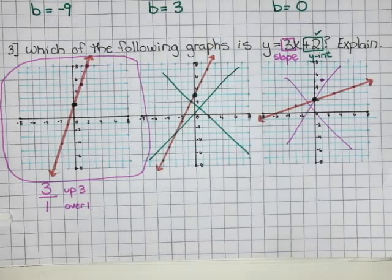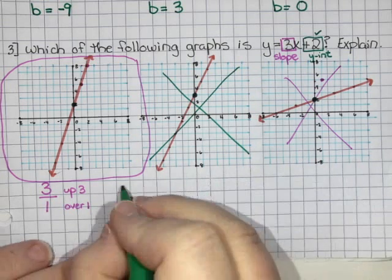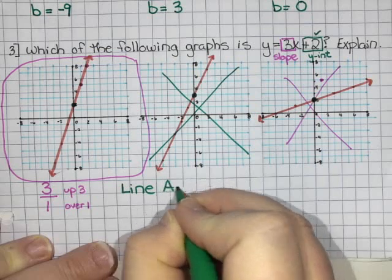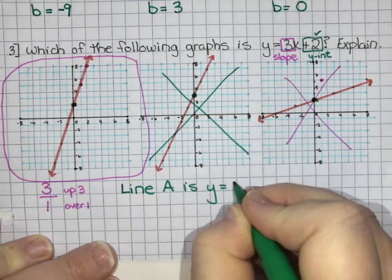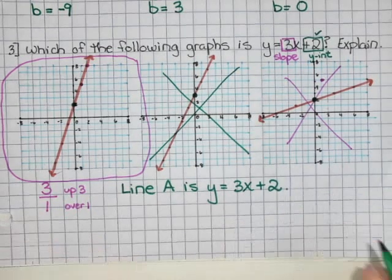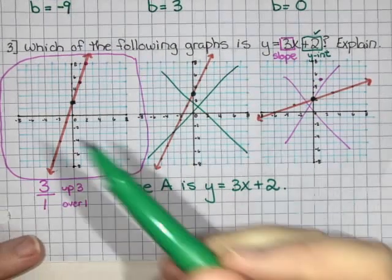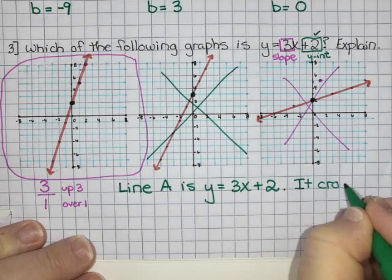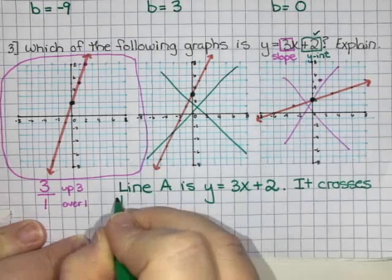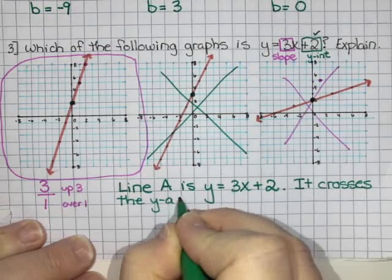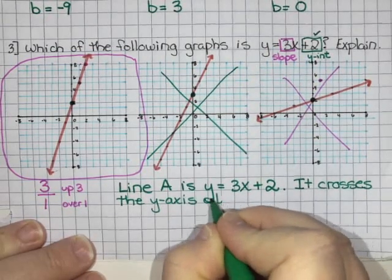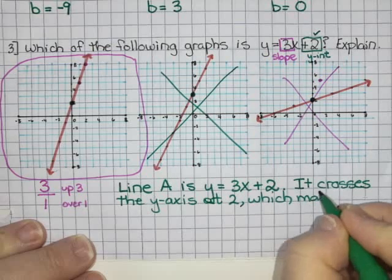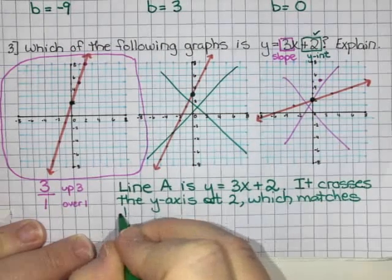I'm going to write: Line A is y = 3x + 2. It wants me to explain my reasoning. How did we know? Well, it crossed the y-axis at 2. I'm going to say it crosses the y-axis at 2, which matches the y-intercept of 2.